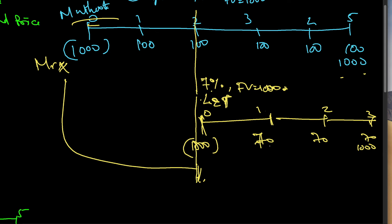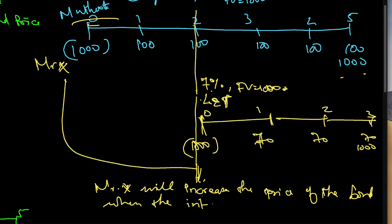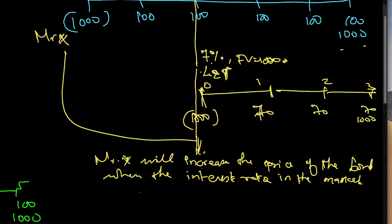When Mr. X sees that his bond has more demand in the market, he will increase the price of the bond. So when the interest rate in the market comes down, the price of the existing bond goes up — confirming the inverse relationship between interest rates and bond prices.